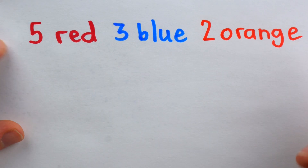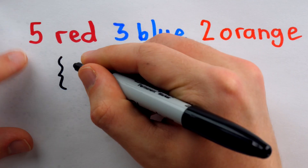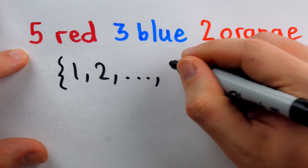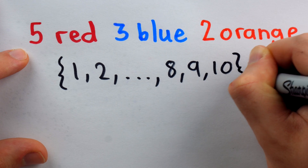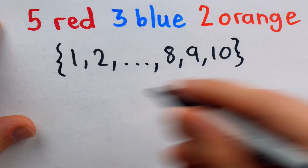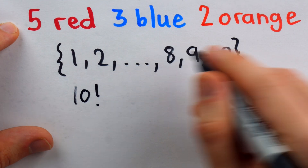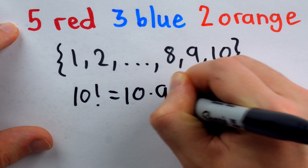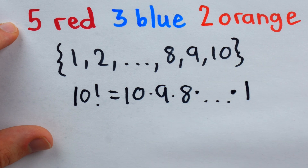Now, if all of the flowers were distinct, this would be just like having a set consisting of 1, 2, 3, 4, 5, 6, all the way up through 10, and just asking how many ways we can order the 10 objects in this set. That's very easy — the number of ways to order those 10 distinct objects would just be 10 factorial, which is 10 times 9 times 8, and so on, all the way down to 1.